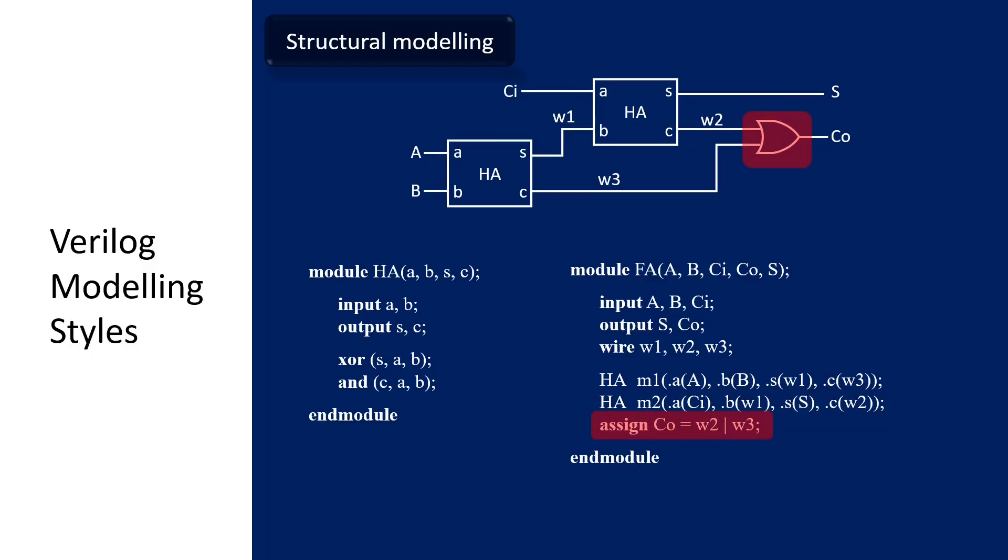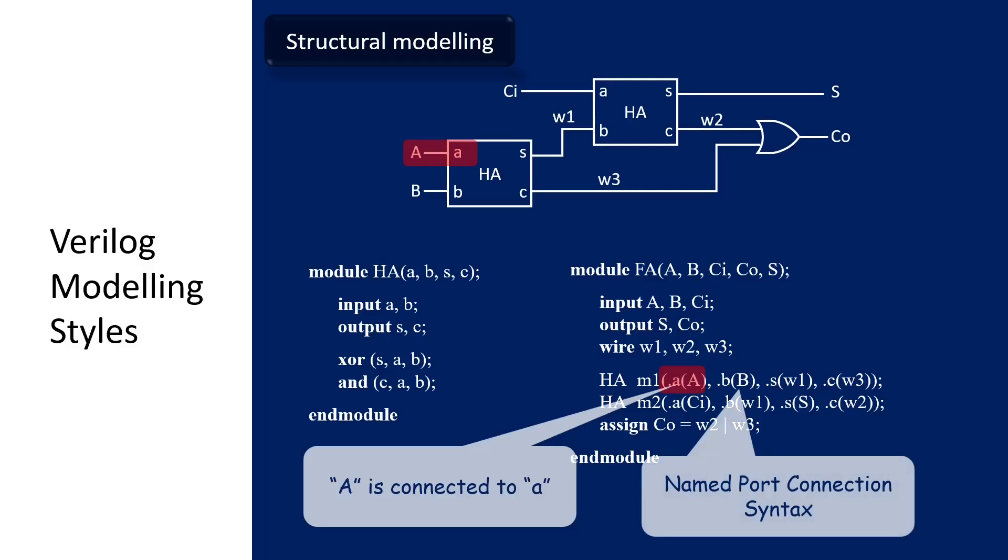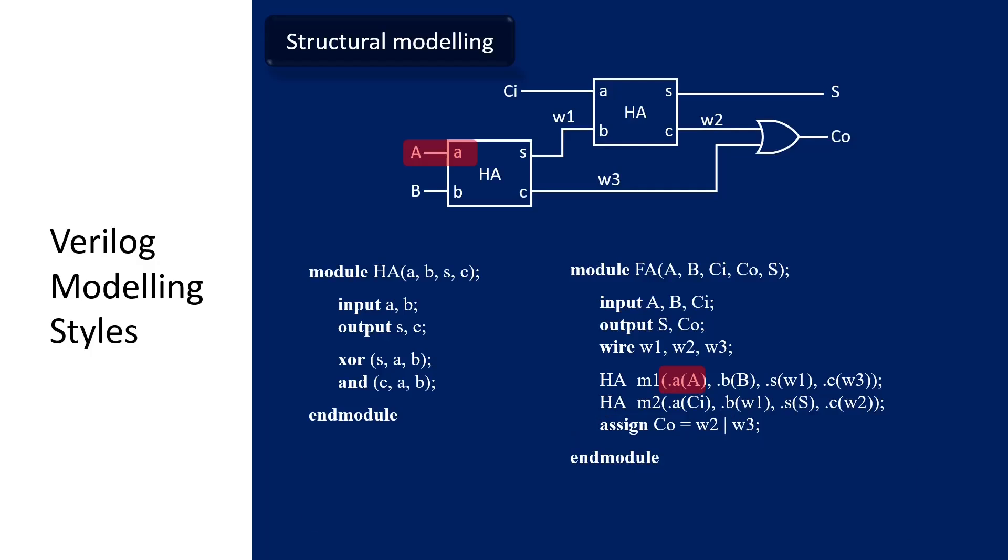The last one is an or gate so we can use the continuous assignment statement to model the gate. Now let's observe the connection between the instantiated module and the top level module. The small a which is the input of the HA module is connected to capital A, which is one of the inputs for the top level module. This type of connection is called the named port connection syntax. Now small b is connected to capital B, S is connected to net W1 and C is connected to net W3. Same as module M2 where A is connected to CI, B is connected to net W1, small s is connected to output capital S, one of the outputs of the top level module, and C is connected to W2.